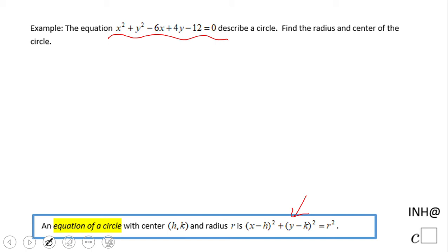How are we going to do that? x squared plus y squared minus 6x plus 4y minus 12 equals 0. So that's what is given to us.